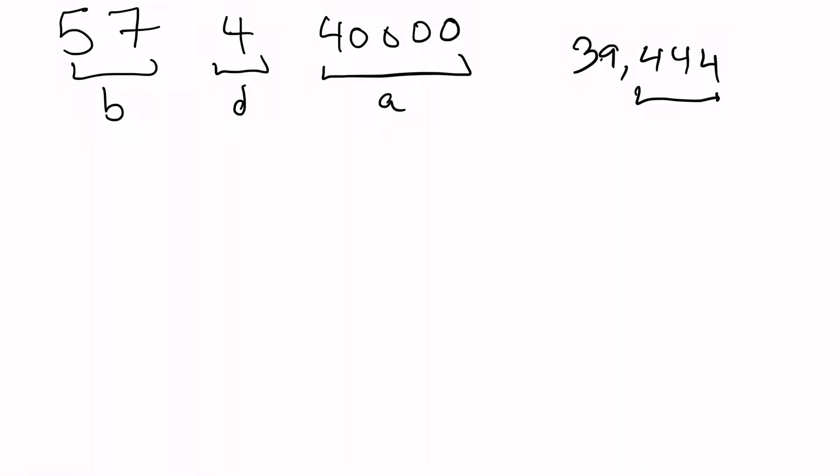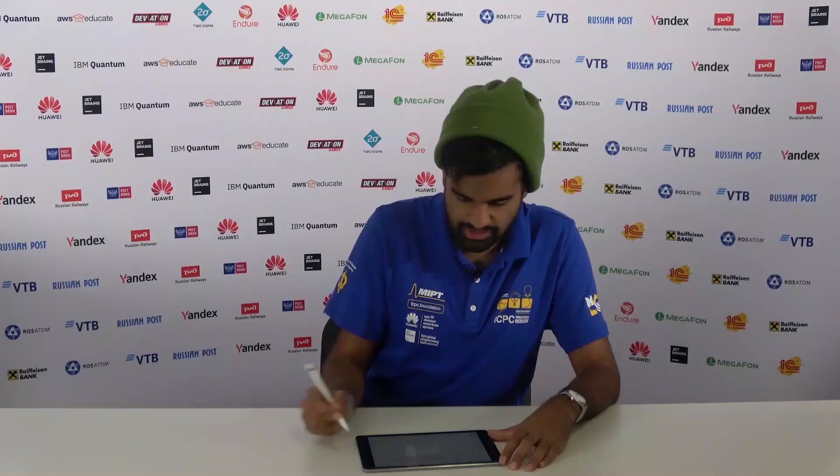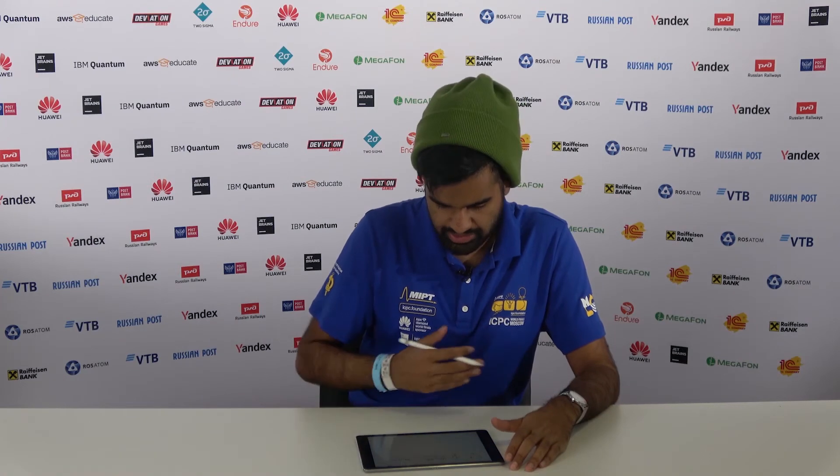One of the harder parts of this problem is the bound on A is quite large. A is less than or equal to 10 to the 10,000. So we can't iterate over every possible bundle price. There's too many.